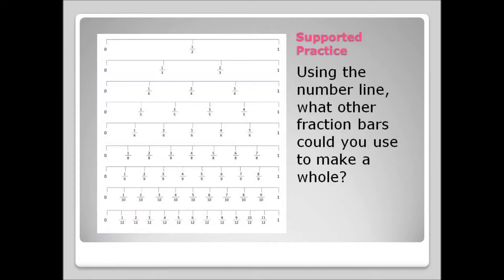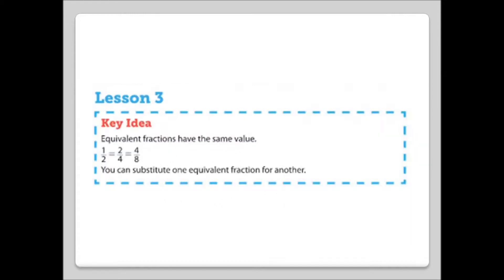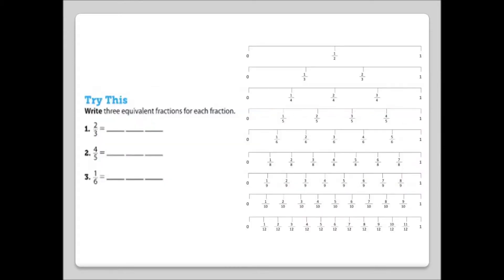Using the number line, what other fraction bars could you use to make one whole? Lesson 3 Key Idea: Equivalent fractions have the same value — one-half equals two-fourths, which equals four-eighths. You can substitute one equivalent fraction for another. Let's try a few problems together. Find just one equivalent fraction for each fraction listed.